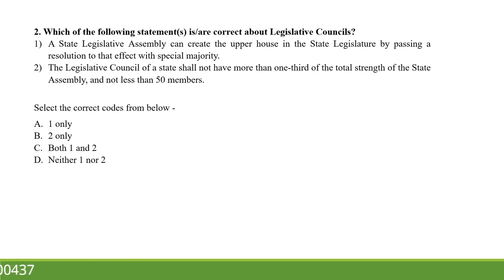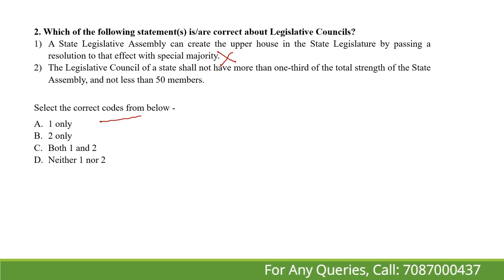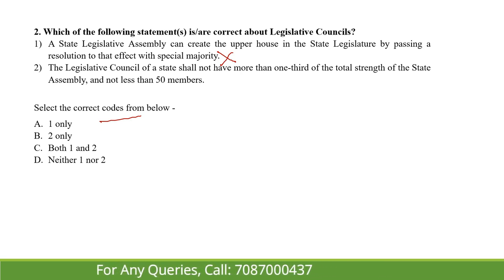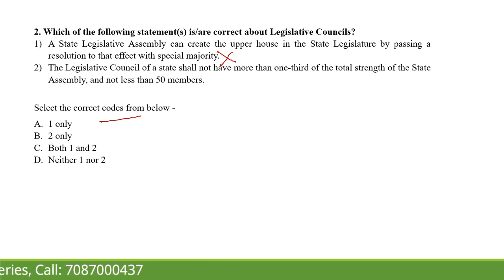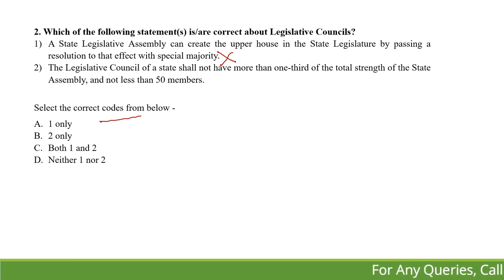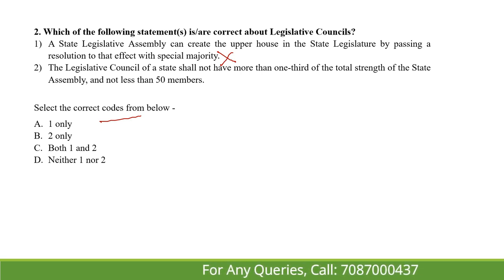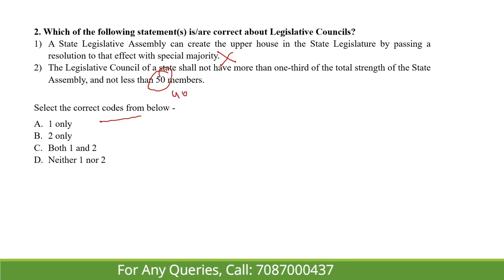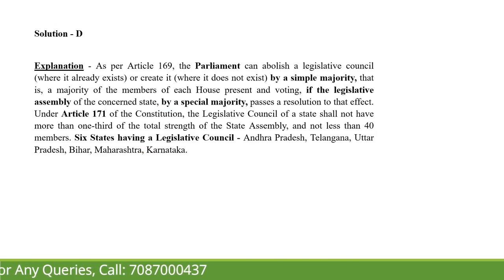We have to choose the correct options here. The first statement is wrong — the state legislative assembly does not have the power to create or abolish legislative councils; that power belongs to Parliament. The second is also wrong — although the legislative council's strength should not be more than one-third of the total strength of the state assembly, it should not be less than 40 members, not 50. So neither statement one nor two is correct.